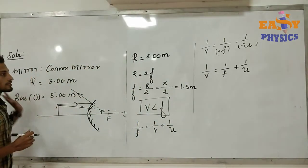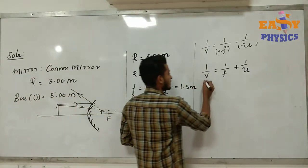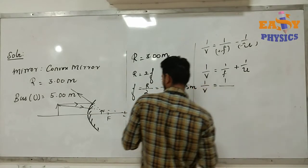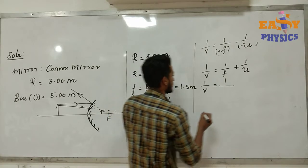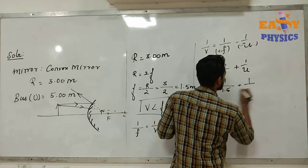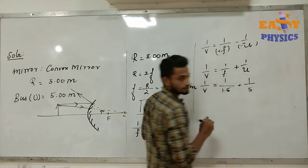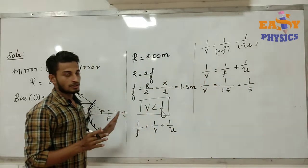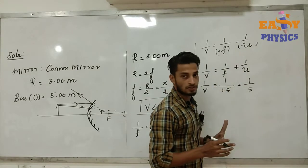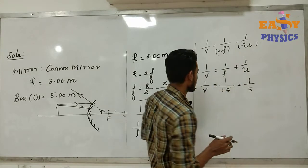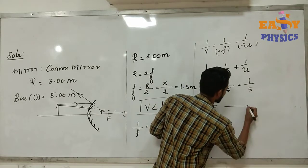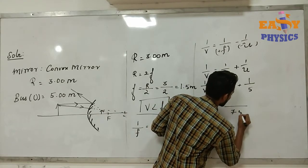Now we substitute the values. 1 by v equals 1 by f plus 1 by u. Here f equals 1.5 meters and the object distance is 5 meters. Since the object distance is negative, negative negative becomes positive. We find the LCM of 1.5 and 5, which is 7.5.